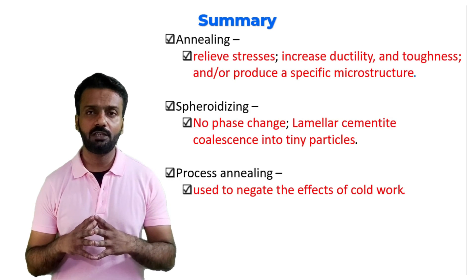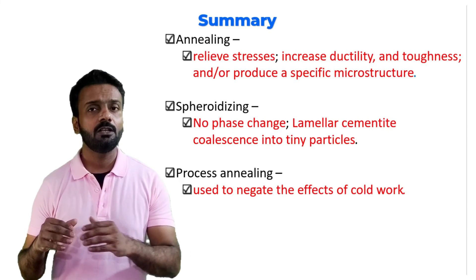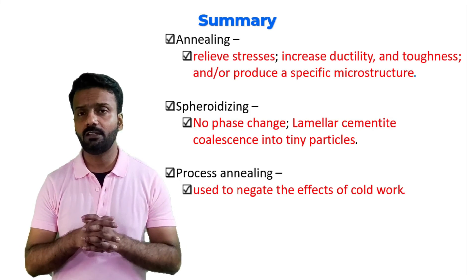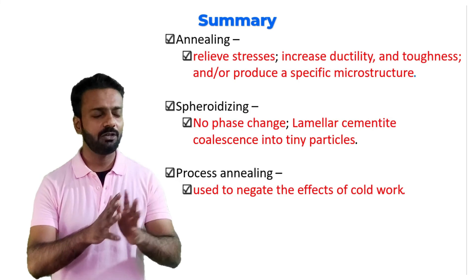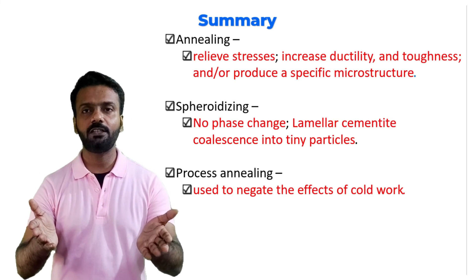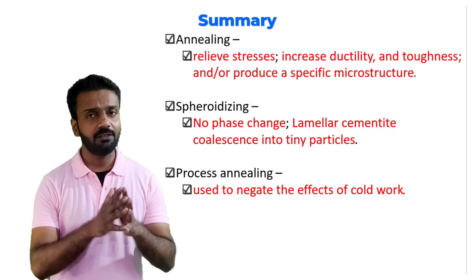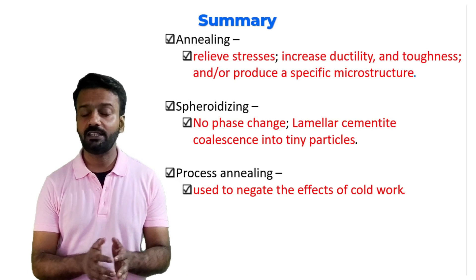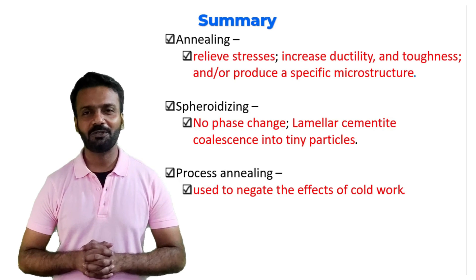In process annealing, whenever processing causes work hardening and strain hardening, we heat the material to allow recrystallized grains to form so further deformation is possible. In stress relief annealing, we heat only to the recovery temperature so that nothing else is affected — the cold working structure is preserved — and only the internal stresses are relieved. If these internal stresses are not relieved, the material can develop warpage, distortion, cracking, and ultimately fail. I hope you understood annealing and its types. Thanks for watching, all the best.